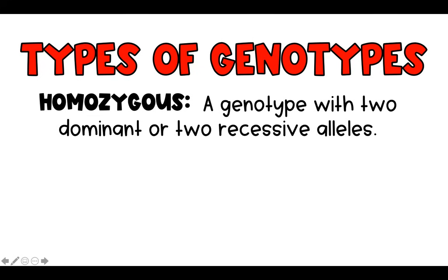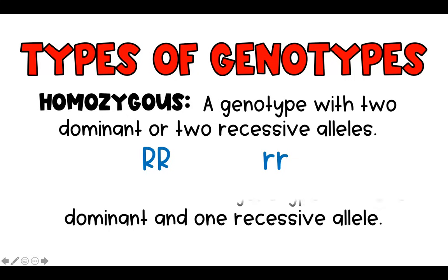Homozygous dominant is written as two capital letters — for example, RR. Uppercase letters represent dominant traits because they're bigger; they won. Lowercase letters represent recessive traits, so lowercase rr is homozygous recessive. Both alleles are the same letter and both are recessive.